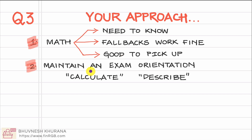The second tip is to always maintain an exam orientation if your main goal in the short run is to clear the FRM exam. When you pick any given section of the curriculum, the first thing you should do is check what the learning objective is for that section — how it is phrased and what the action keyword is. If it's a 'calculate' learning objective, you should know how to correctly apply any given final result to a wide variety of numericals. Practice really does help a lot for these learning objectives.